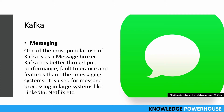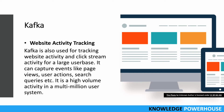The first use case is messaging — this is the most popular use of Kafka as a message broker. In an organization, if there are many messages published by different services, Kafka is the one which can take messages from producer to consumer. Kafka has much better throughput, performance, fault tolerance, and features than other messaging systems. Due to this, it is used for message processing in large systems like LinkedIn and Netflix, where billions of messages are processed with Kafka.